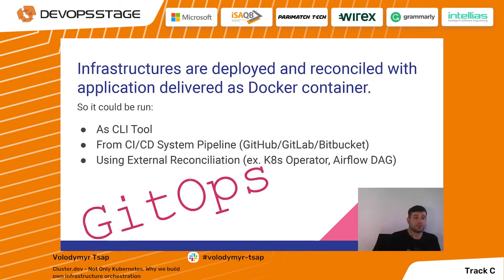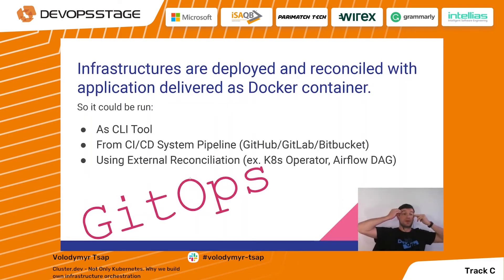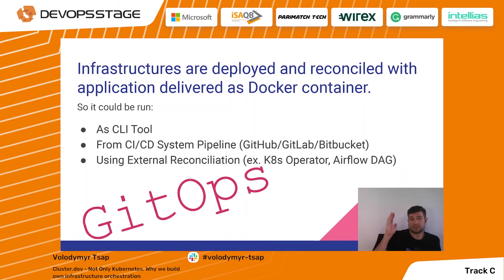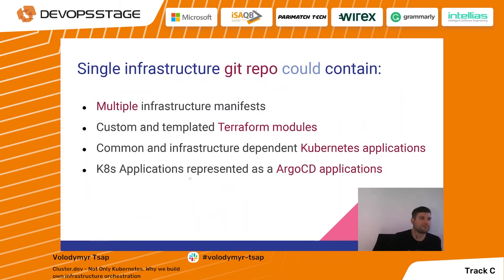The next design approach is that infrastructure is deployed and managed using the application delivered as a Docker container. Everything packed in one container can be run as a CLI tool, from CI/CD pipelines, or with external reconciliation like a Kubernetes operator or Airflow — anything that can run Docker containers. This is the GitOps approach we actually use: when you can run something using containers in a quite monolithic way, you can run it everywhere.